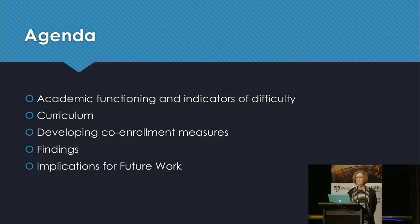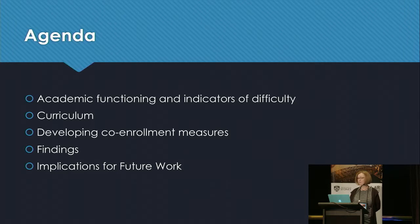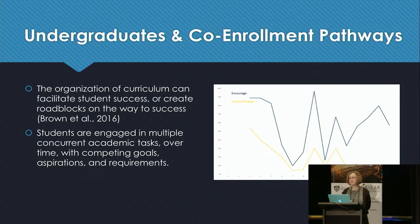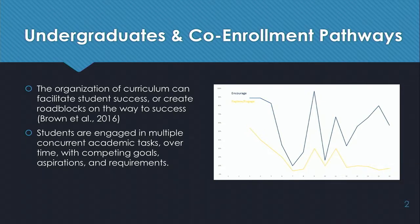We're also looking at co-enrollment, and to do that we looked at academic functioning and indicators of difficulty — being course difficulty. We looked at curriculum and developed co-enrollment measures. What we know, and has already come out in the comments, is that courses aren't taken in isolation. Students enroll in multiple courses over time and each of those courses has different rhythms.